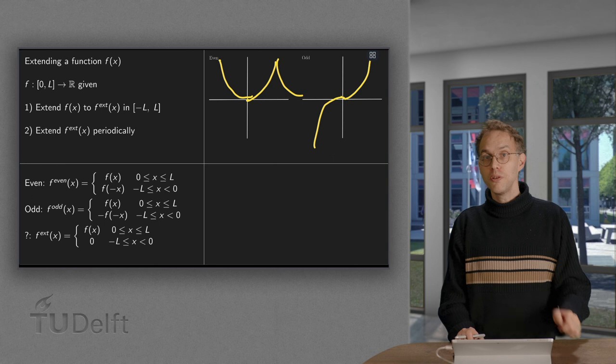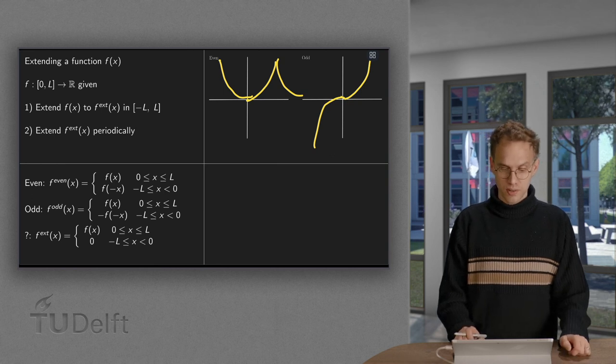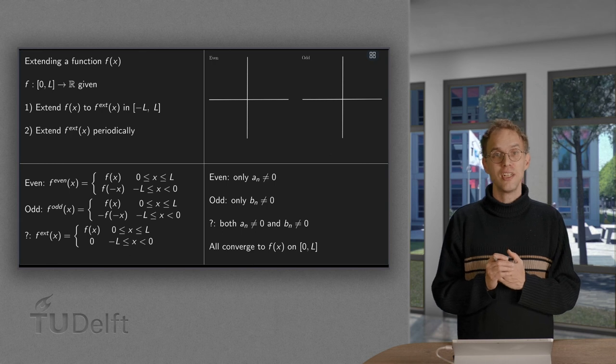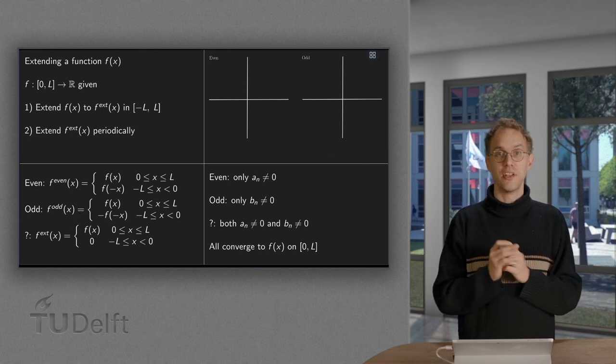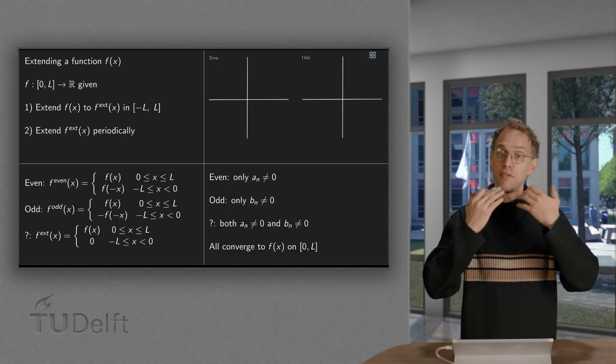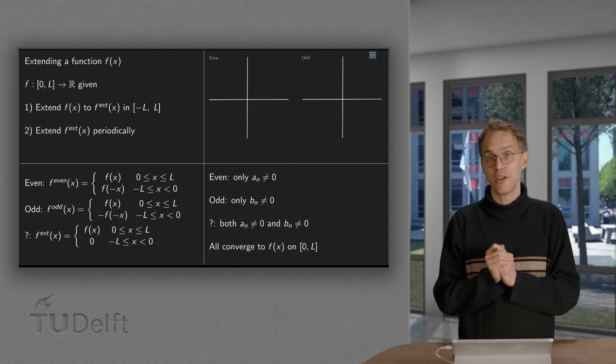So, which one to use, and why? Well, if we use an even extension, then our function between minus L and L will be even, and our Fourier series will have only aNs. Only the aNs are non-zero.